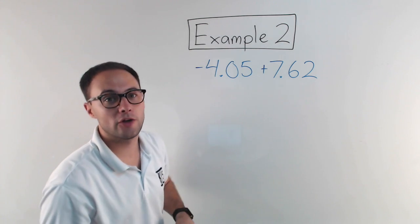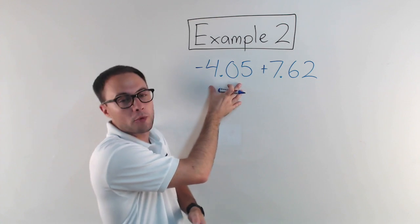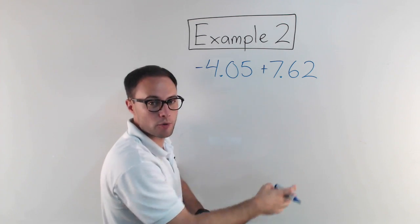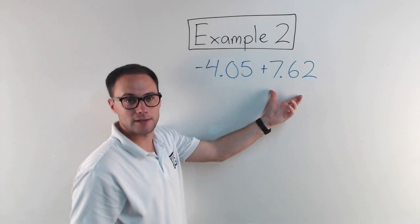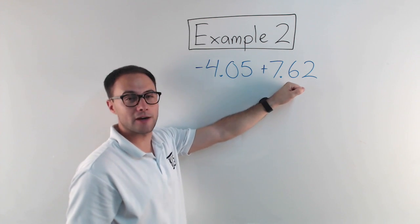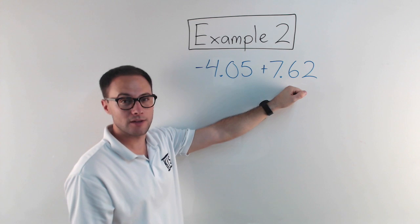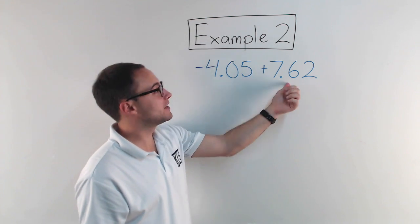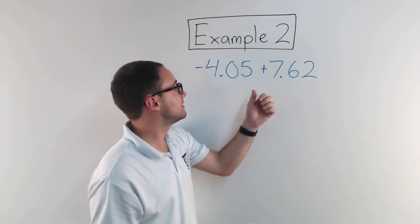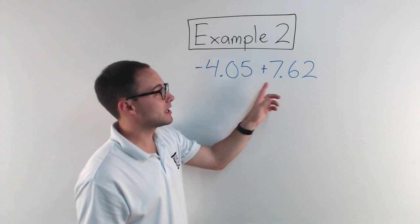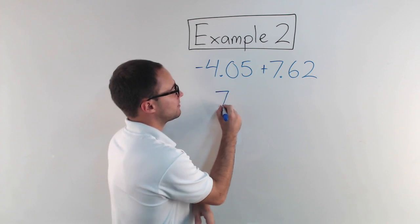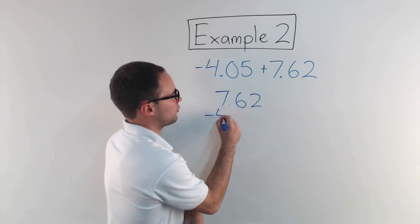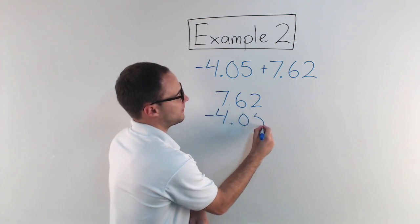We do the same thing in this situation. Take the absolute value of each. Well, that would be four-point-zero-five. That would be seven-point-six-two. So I'm going to subtract four-point-zero-five from this. And I know that because this is greater, my answer is going to stay positive. If this was negative instead of this being negative, then my answer would be negative in that situation.